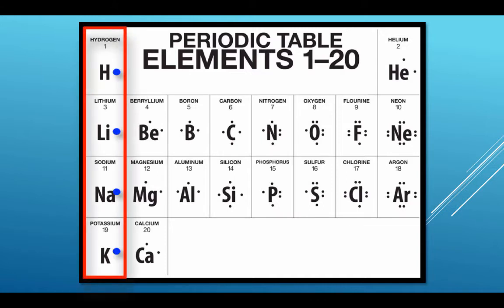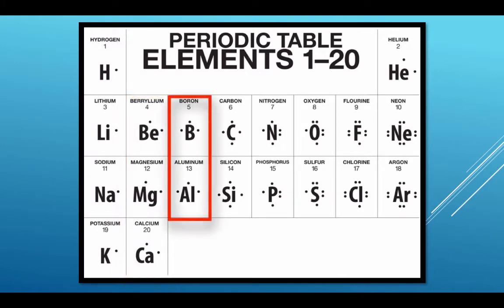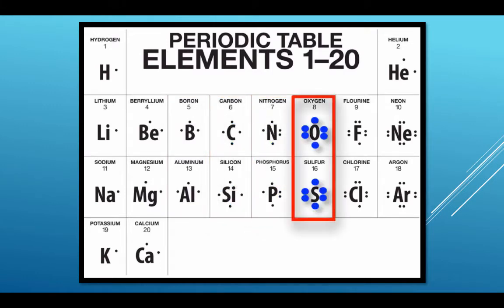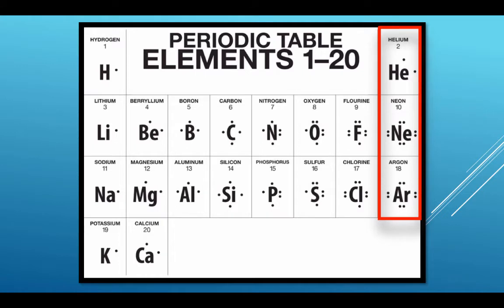In the first column, they each have one valence shell electron. In the second column, they have two. In the third column, three. In the fourth column, four. In the fifth column, five. In the sixth column, six. In the seventh column, there are one from being full, seven. In the last column, they were completely filled. Helium, two. The rest, eight.